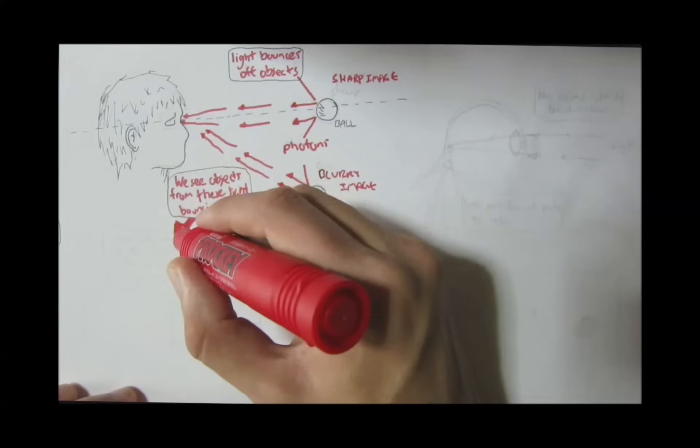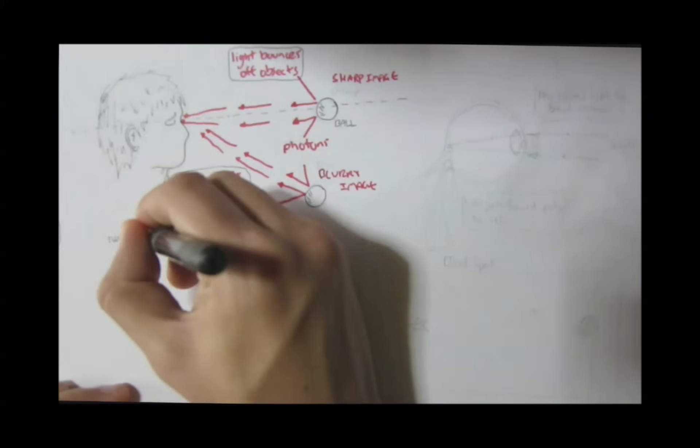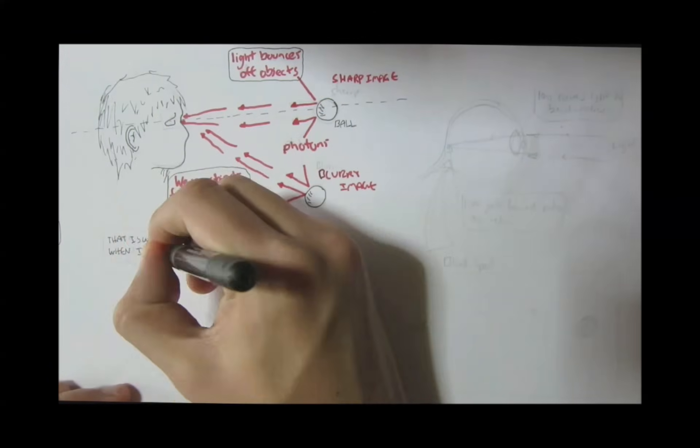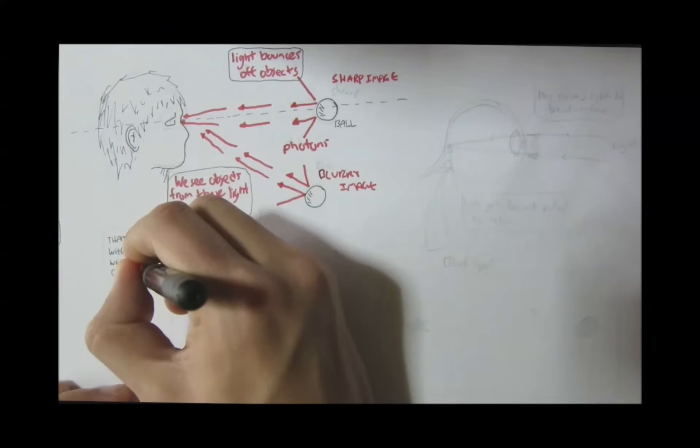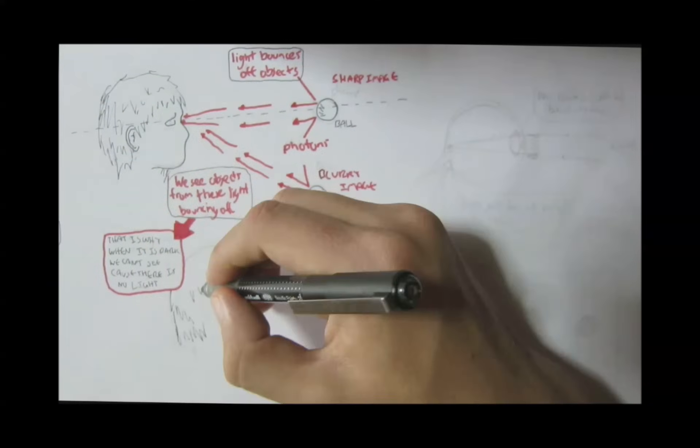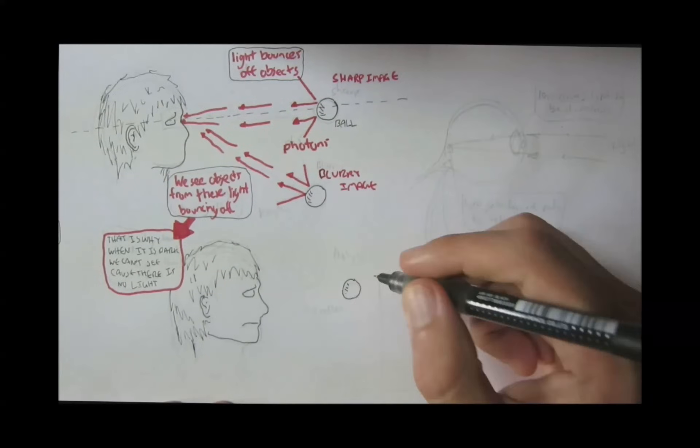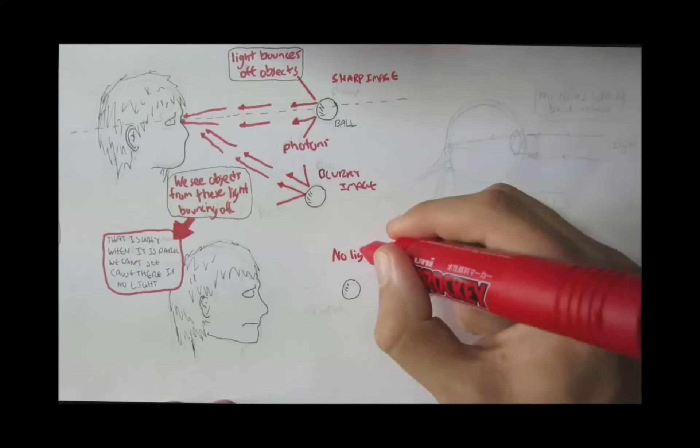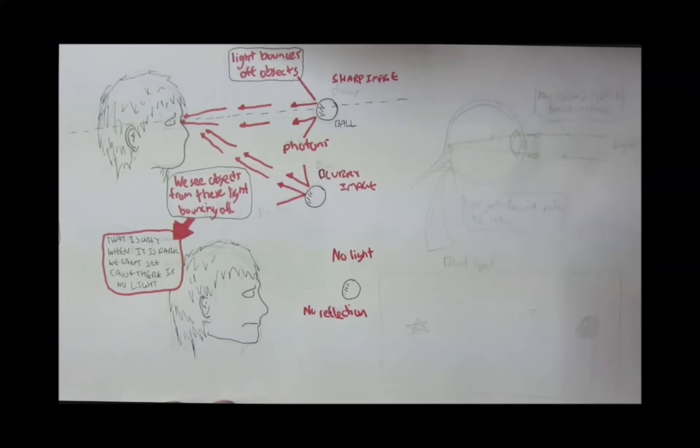So, again, we see objects because light bounces off of them. That is why when it is dark, we can't see anything because there is no light to bounce off the object. For example, this guy here can't see the ball without light because there is no light reflecting off of it.